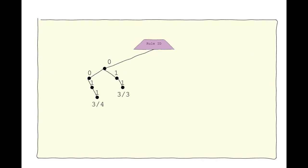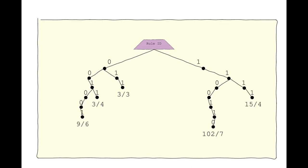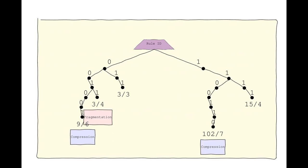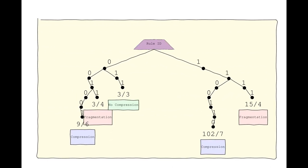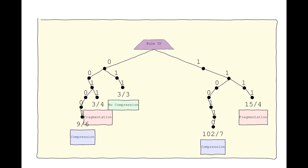In SCHC compression and fragmentation, rules may share the same identification space. There is also a special rule called no-compression that can be used when no other compression rule is applicable for compressing a packet.